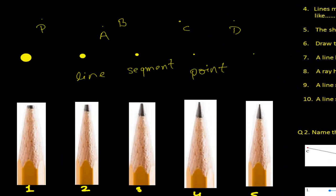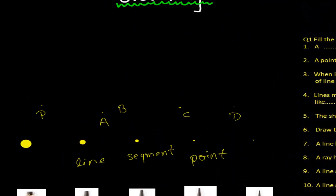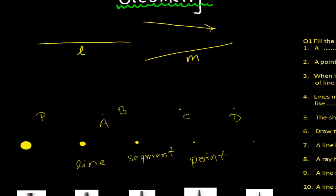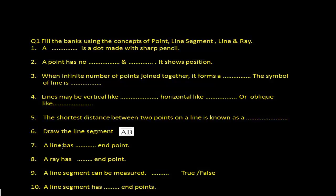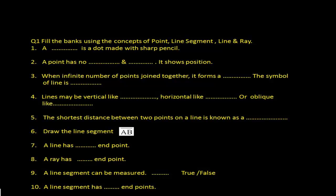I forgot to mention in the previous video that a line is also sometimes represented by small letters. For example, this is line M, this is line N. You may also be given a line segment P, written like this. So sometimes we represent lines and line segments using small letters like this.